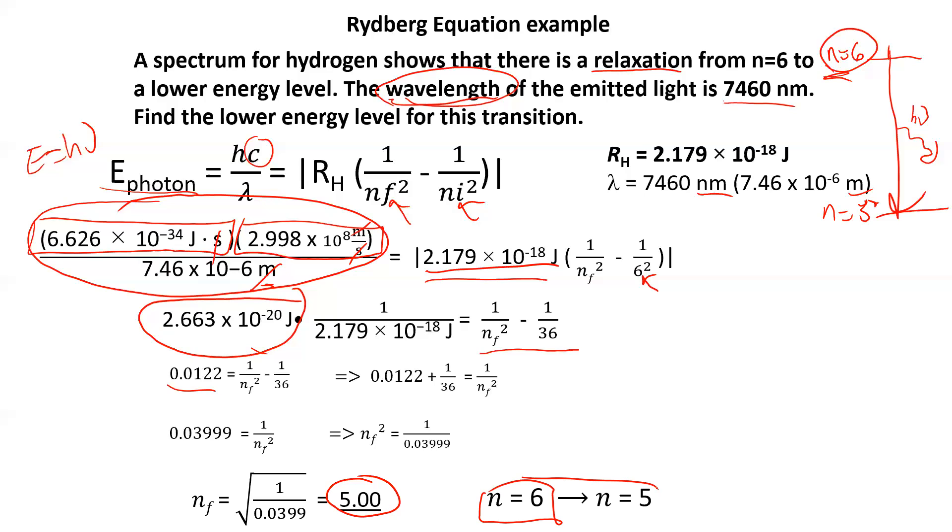So why is it not a lot of energy? Well, if you look, the wavelength is really long. It's 7,460 nanometers. In the visible spectrum, it's 400 to 750 nanometers. So this is a really long wavelength. It's way outside of the visible spectrum. We said that energy of a photon is Planck's constant times speed of light divided by wavelength. So the energy is inversely proportional to the wavelength. So if the wavelength is really long, there's not a lot of energy. And that makes sense. This is a long wavelength. This transition isn't a big difference. So there's not a lot of energy.